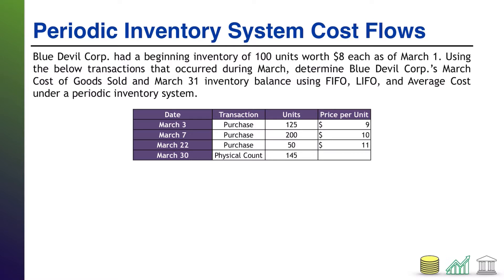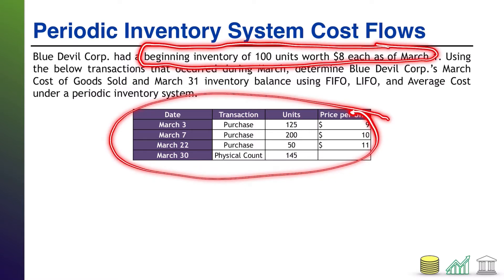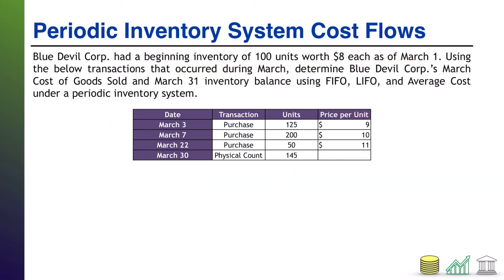All right, welcome back. Whenever you see me do a problem like this, I always like to organize my given information right out the gate to make sure that I don't overlook anything important. One thing on this problem particularly that's easy to overlook is the table of data does not include the beginning inventory of 100 units. So I'm going to add right up here: March 1 beginning inventory, 100 units at a price of $8 each.